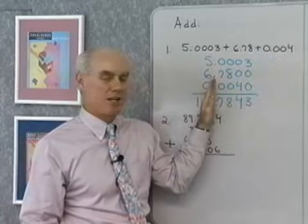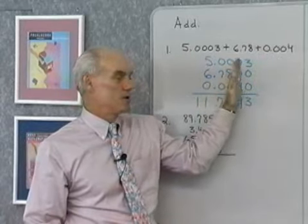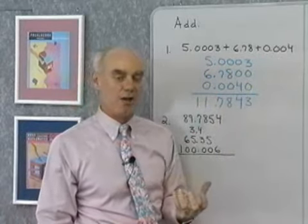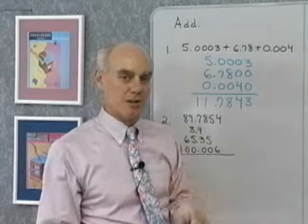And so, the rule is simply align the decimal points, and then add the numbers that are in the same column, or add numbers with the same place value. Here's another example.